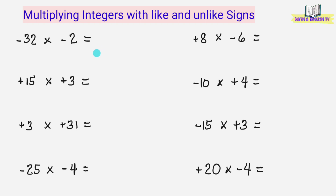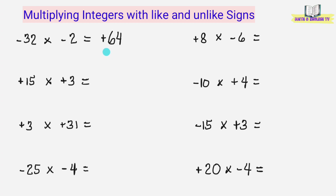Okay, sagutin natin ang mga ito. Una, negative 32 times negative 2. Imultiply lamang natin yung numbers: 32 times 2 equals 64. Then, lalagyan natin ng positive sign dito. Positive yung answer kasi pariho yung sign ng numbers na ating iminultiply — pariho silang negative, ang answer dapat positive. Kaya yung answer ay positive 64.